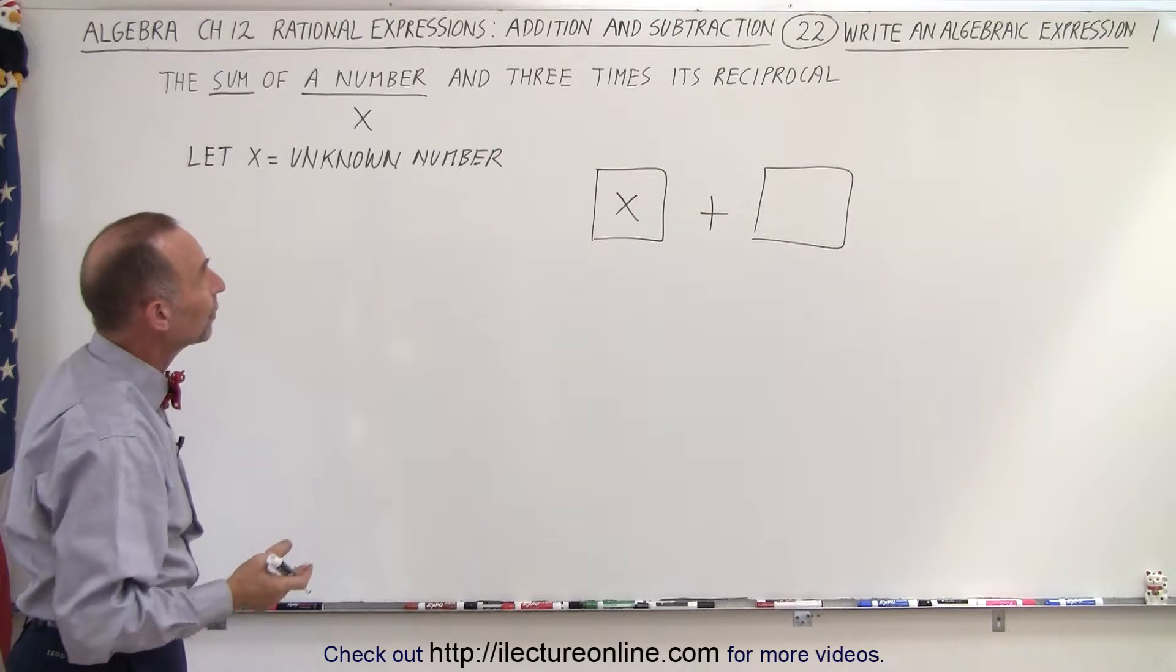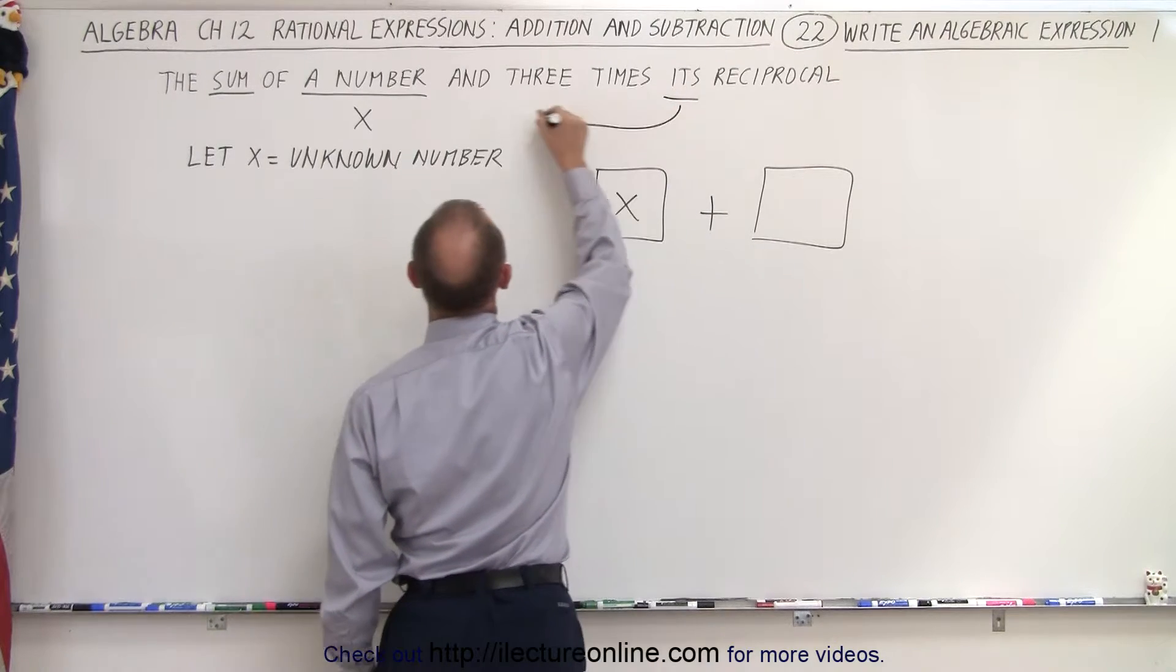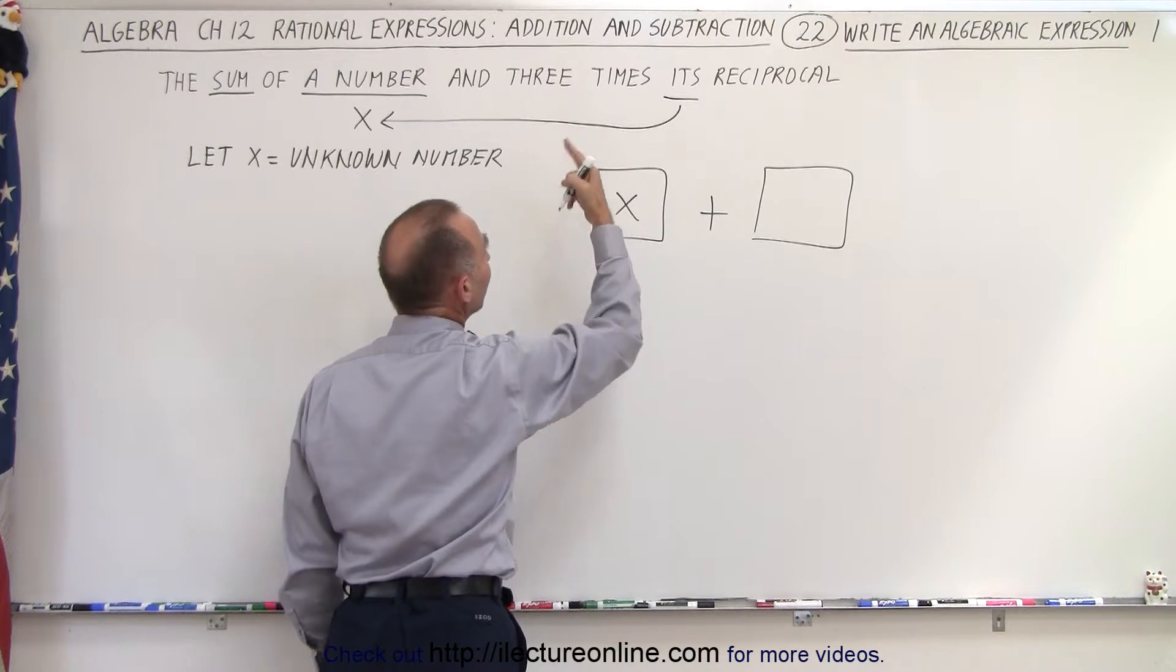And then the other thing we're going to add is three times its reciprocal. So we look at the number X. We're going to take three times its reciprocal.